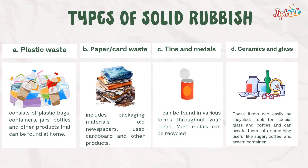Other types of solid rubbish include plastic waste, paper and card waste, tins and metals, and ceramics and glass. Under plastic waste: plastic bags, containers, jars, bottles, and other products found at home. For paper and card waste: packaging materials, old newspapers, used cardboard, and other products.